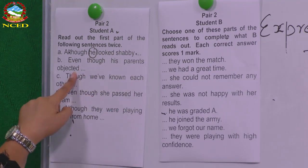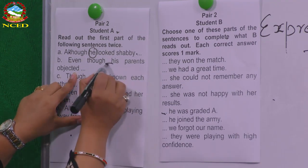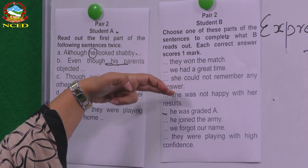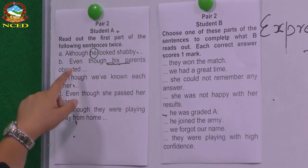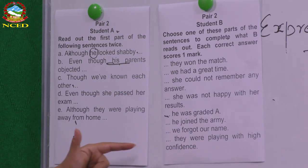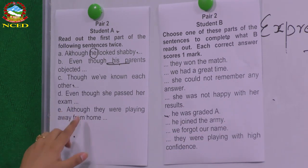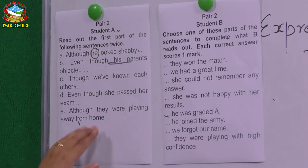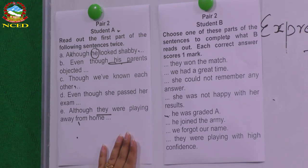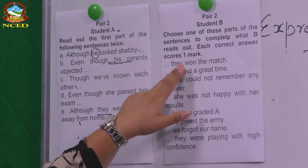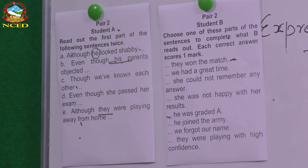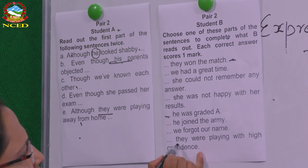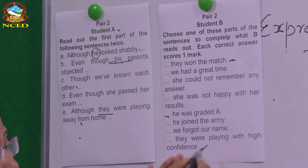Similarly, 'even though his parents objected' — his parents are the subject, so look for a sentence with 'he.' 'He joined the army even though his parents objected.' For 'although they were playing away from home' — it's about 'they,' so: 'although they were playing away from home, they won the match.' Similarly, 'they were playing with high confidence' is also possible.